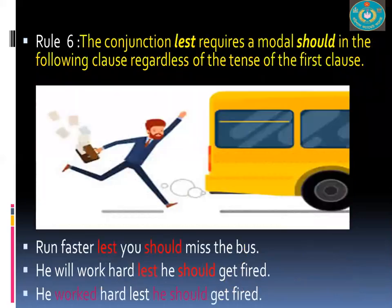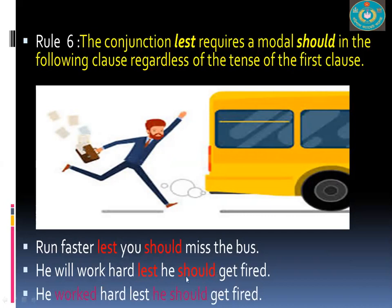The conjunction 'lest' requires the modal 'should' in the following clause, regardless of the tense of the first verb. 'Lest' and 'should' have a built-in relationship. 'Run faster, lest you should miss the bus' — present tense, but 'should' is used. 'He will work hard, lest he should get fired' — future tense, yet 'should' appears. 'He worked hard, lest he should get fired' — past tense and 'should'. Whatever the tense, if 'lest' is used, the next clause must have 'should'.